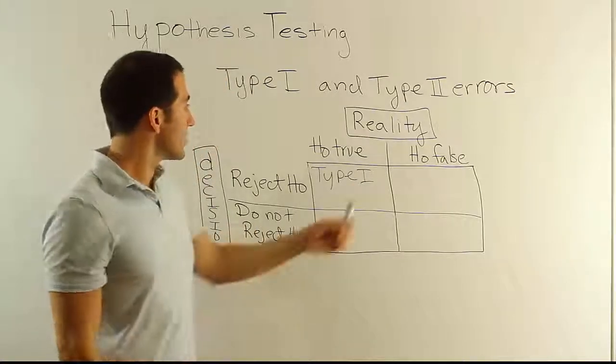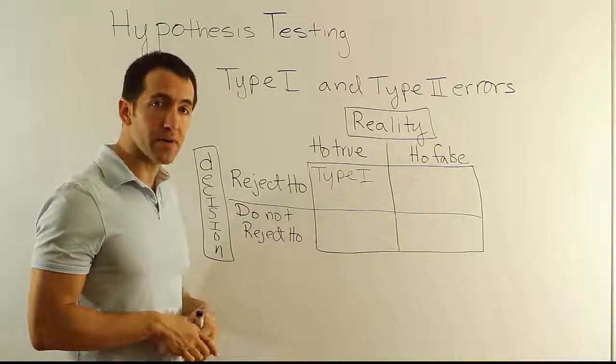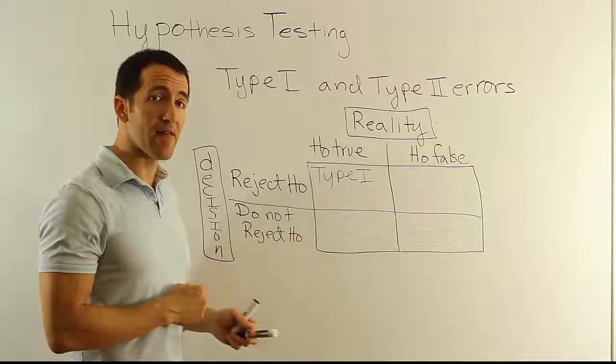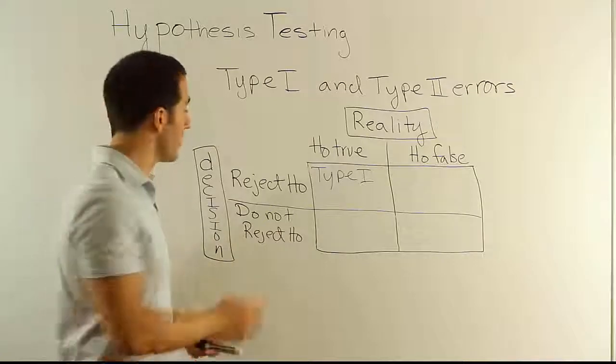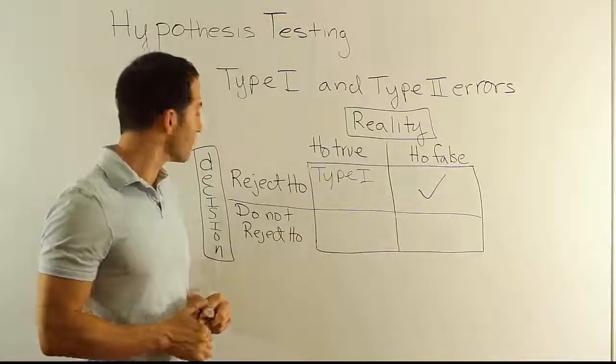Alright, let's look at this scenario. H0 is actually false and we reject it. Well, if it's false and we reject it, is that a good thing or a bad thing? I'd say it's a good thing. If it's false, it should be rejected. So I'm going to give that a check mark and say that's good work.